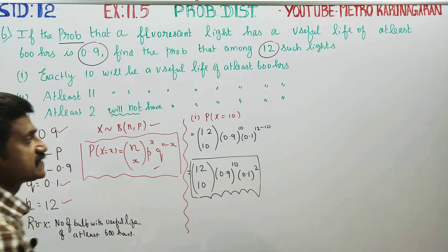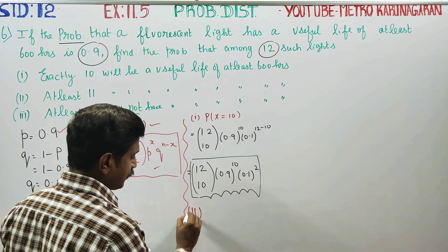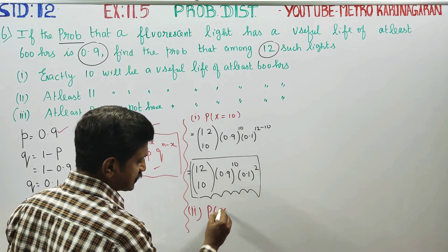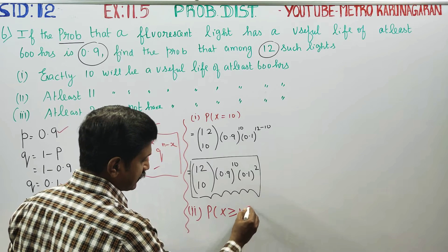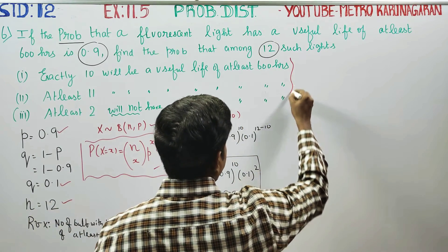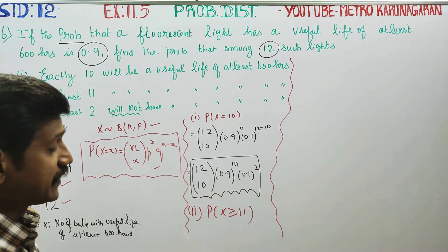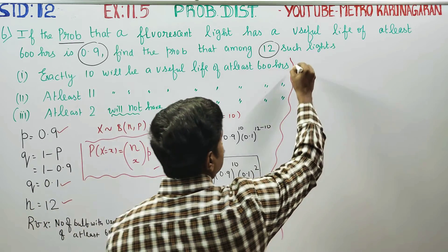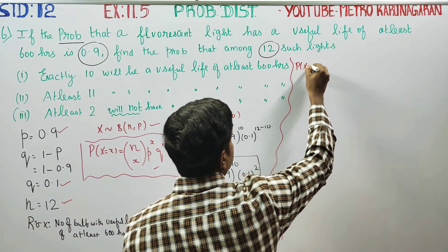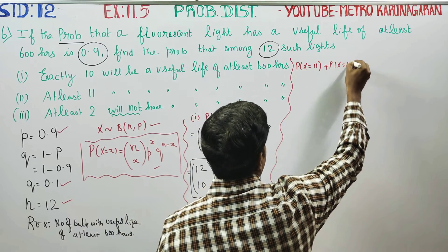After completing the first sub-question, the second sub-question is: find the probability that at least 11 bulbs have useful life. At least 11 means greater than or equal to 11. The meaning of greater than or equal to 11 is P(X = 11) plus P(X = 12).